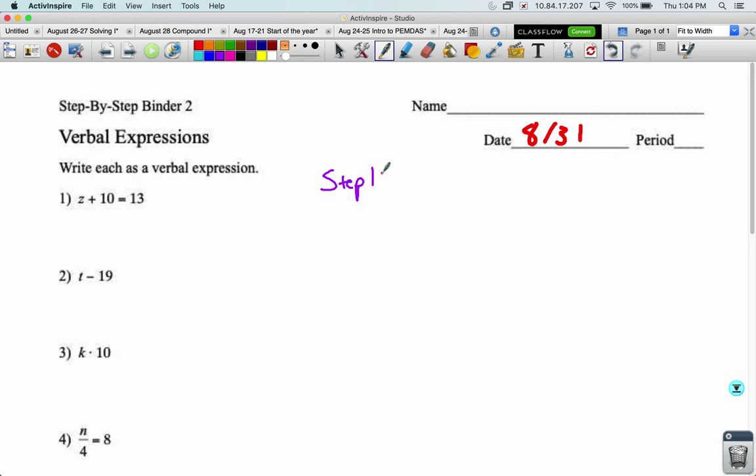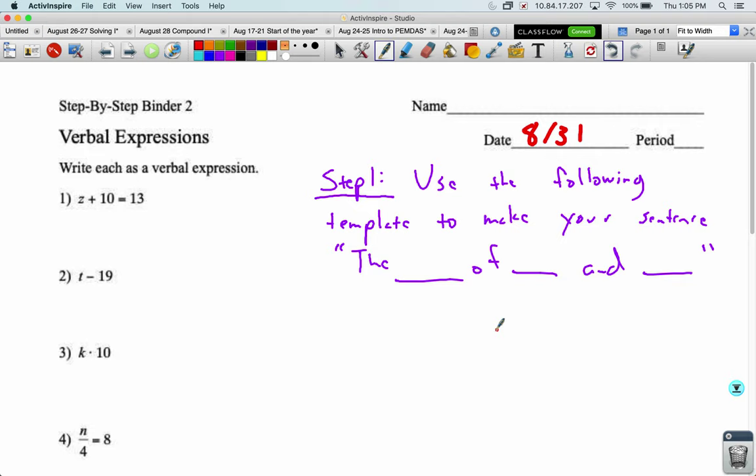Alright, so step one. When we read one of these, we use a very similar sentence every time. So I'm going to call that sentence a template. Step one: Use the following template to make your sentence. And it goes the blank of blank and blank. So that is our template. We just fill in these blanks. The blank of blank and blank.